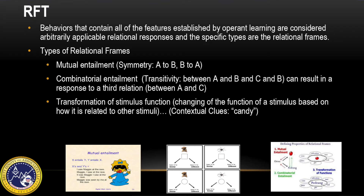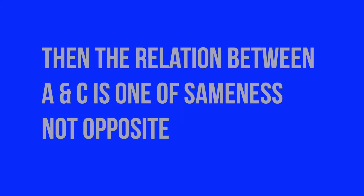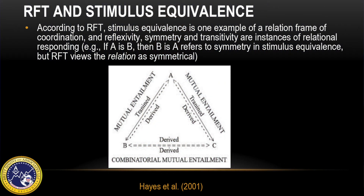Similarly, the term combinatorial entailment encompasses transitivity, but also refers to relations that cannot be described as transitive. For example, transitive responding in the context of a frame of coordination would entail that if A is the same as B and B is the same as C, then A is the same as C. However, in the case of a frame of opposition, if A is the opposite of B and B is the opposite of C, then the relation between A and C is one of sameness, not opposite. Therefore, the relations are not strictly transitive, but they are combinatorially entailed — that is, the relations between A and B and between B and C combine to entail the relations between A and C and between C and A.